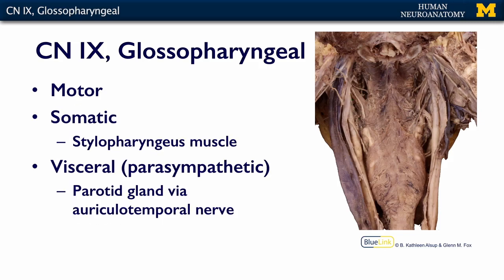The motor component of the glossopharyngeal nerve innervates the stylopharyngeus muscle. That is the key to finding this nerve in dissection — the glossopharyngeal always lies right along that muscle. The remaining skeletal muscle forming the upper part of the pharyngeal constrictors is continuous with the esophagus and is all innervated by the vagus nerve.